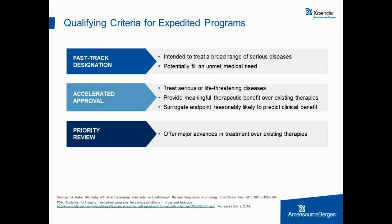The key feature of accelerated approval is the ability to use a surrogate endpoint — one that is considered reasonably likely to predict clinical benefit. A surrogate endpoint is a marker such as a laboratory measurement or radiographic image that is thought to predict clinical benefit but is not itself a direct measure of clinical benefit; overall response rate is one example. Priority review, the last expedited track, is available for drugs that provide a significant improvement in treatment, prevention, or diagnosis of diseases compared to existing therapies.